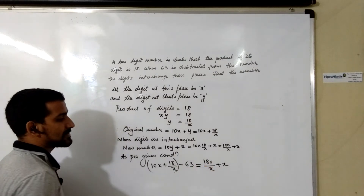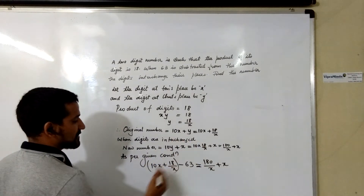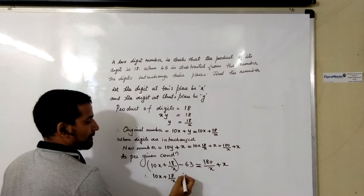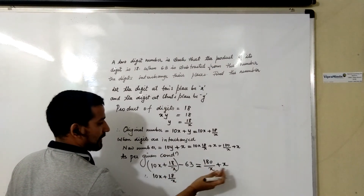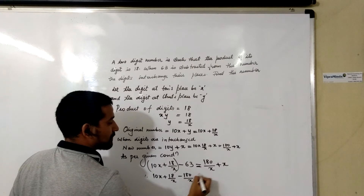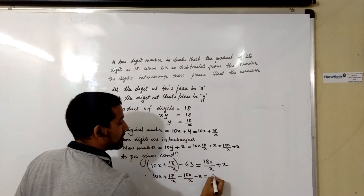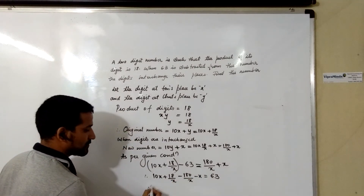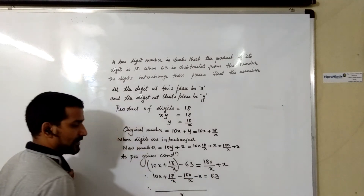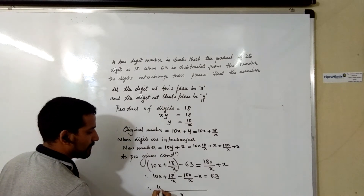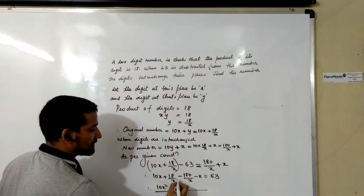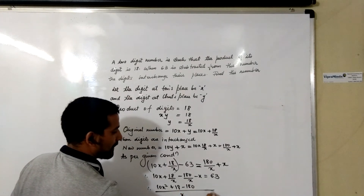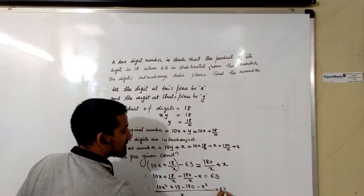We take all variable terms on one side and the constant term on the other. So 10X + 18/X − (180/X + X) = 63. Taking the LCM, we get (10X² + 18 − 180 − X²) / X = 63. Cross-multiplying, we get 10X² − 162 − X² = 63X.